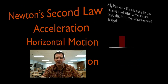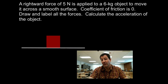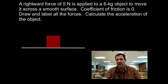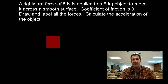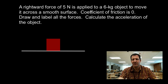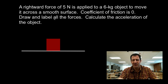Here is our first problem. We have a rightward force of 5 Newtons applied to a 6 kilogram object. It's moving across a smooth surface. I have written down that the coefficient of friction is 0, which means there's no friction. We're going to draw and label the forces, calculate the magnitude of the forces, and then calculate the acceleration of the object.